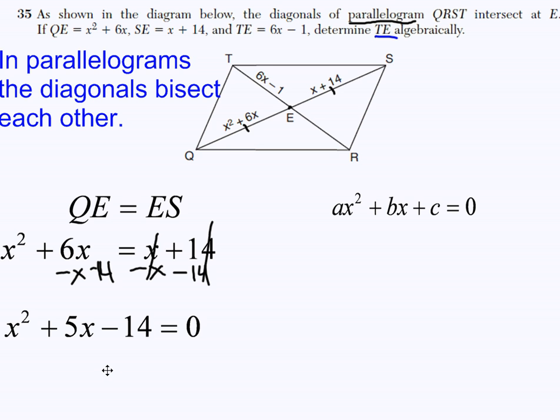Now, the next step is to factor this trinomial here. X and X is going to multiply to give us X squared. I need two numbers that are going to multiply to give me C, and at the same time, are going to add up to give me B. So, what are those two numbers? I know that 7 and 2 are going to work.